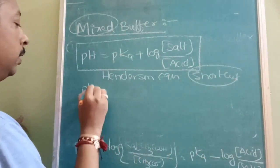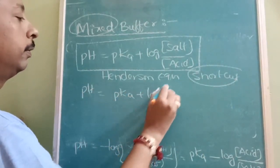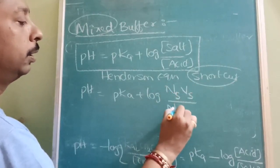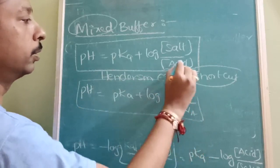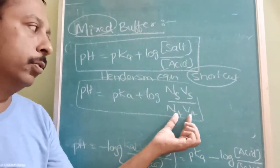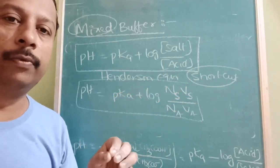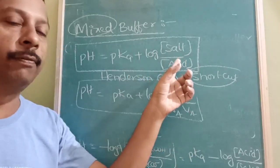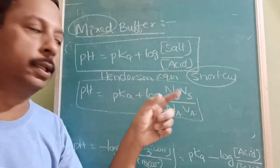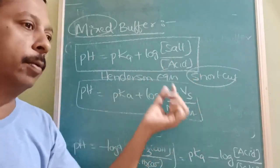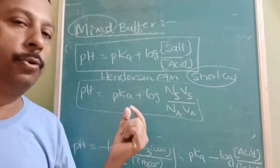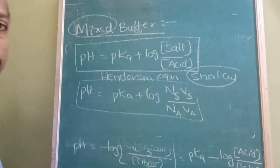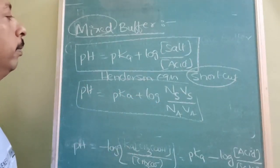Shortcut formula: pH = pKA + log(nS·VS / nA·VA). Actually we are talking about concentration, but here we are getting the equivalent moles because all are in the same solution — the volume cancels. If normality and volume are given, directly put into this formula. You should convert them into normality — molarity and normality conversion you already know.